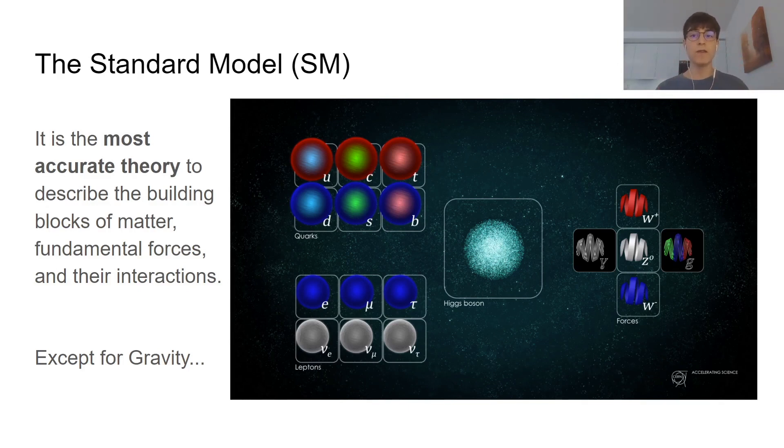According to it, the universe is made of matter particles and force carriers. For example, protons and neutrons are made of matter particles called quarks, whereas electrons are part of a larger group called leptons. Fundamental forces are described as the exchange of force carriers that are called bosons between different matter particles. The most common example is the photon, which is exchanged during interaction via the electromagnetic force.